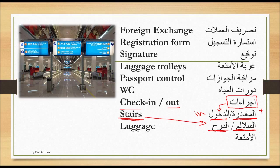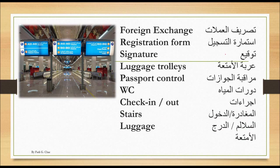Stairs is al-salalim or al-daraj — use whichever is easier for you to spell. Al-salalim or al-daraj. And luggage again is al-amti'a.